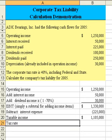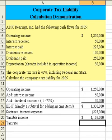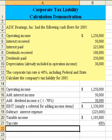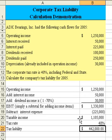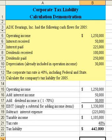In this problem the tax rate is given — there's nowhere I can pull it from, it's in text — so I'll use 40%. The last step will be to compute the tax liability, which will be equal to our taxable income amount times 40%. And that is the solution. This problem demonstrates a number of items that go into the calculation of a corporation's tax liability.